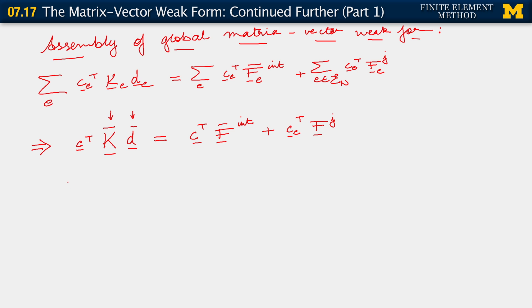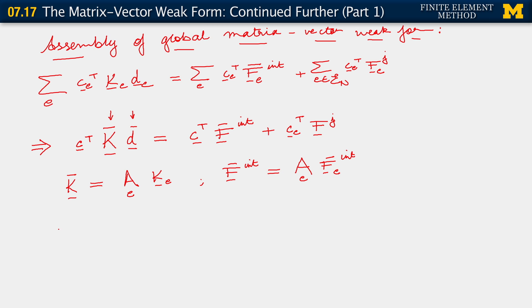Let's first look at what K̄ itself is. K̄ is defined through the abstract representation of the assembly over all elements of the individual element stiffness matrices. And likewise, F̄_internal is the assembly over elements of F̄_internal for each element E. Now, let's talk a little about K̄. Essentially, this process of assembly is something we go through by looking at mesh connectivity and simply putting together the components of K̄ by accounting for the local and global degrees of freedom.